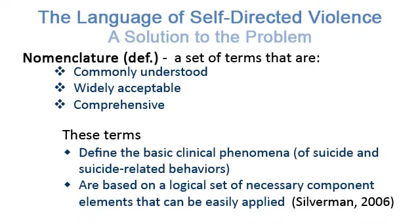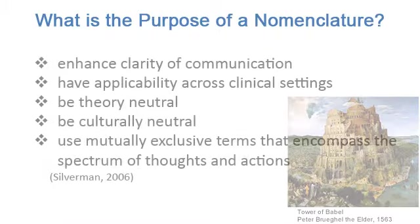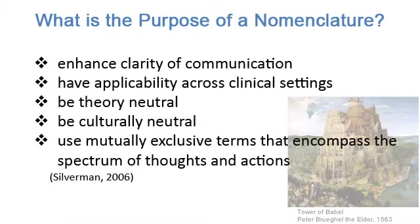A nomenclature is a set of commonly understood, widely acceptable, comprehensive terms that define a basic clinical phenomenon. The terms are based on a logical set of necessary component elements that can be easily applied. Essential features of a nomenclature are that it enhances clarity of communication, has applicability across clinical settings, can be theory-neutral and should be culturally neutral, and that terms are mutually exclusive and encompass a spectrum of thoughts and actions.